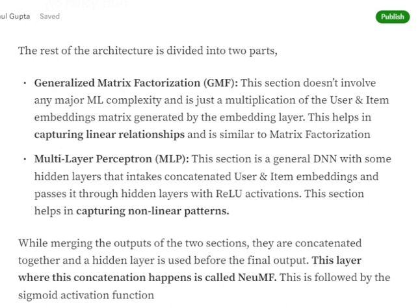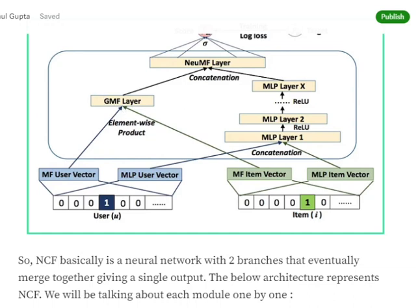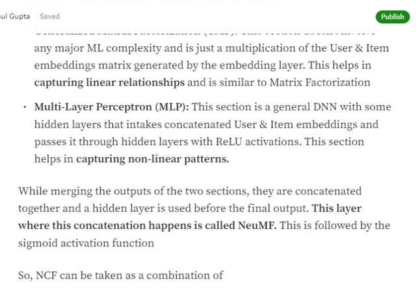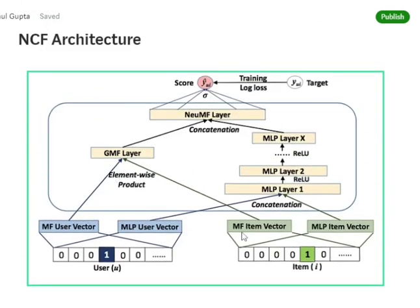The first major branch is Generalized Matrix Factorization (GMF). This branch captures linear relationships, similar to traditional matrix factorization. The left-hand side GMF layer performs an element-wise product of the MF user vector and MF item vector — there is no non-linearity captured here. The second part is the Multi-Layer Perceptron (MLP), a general deep neural network with multiple hidden layers using ReLU activation. For the MLP branch, the MLP user vector and MLP item vector are concatenated side by side before being fed into the network.